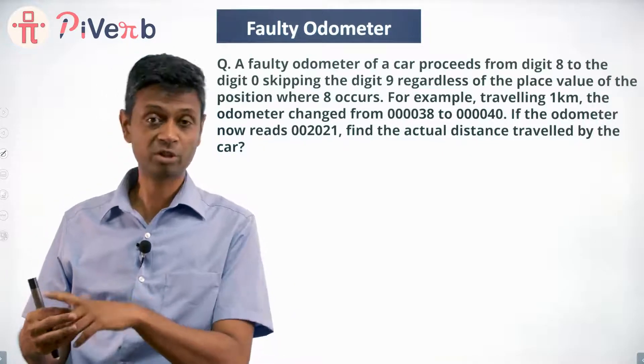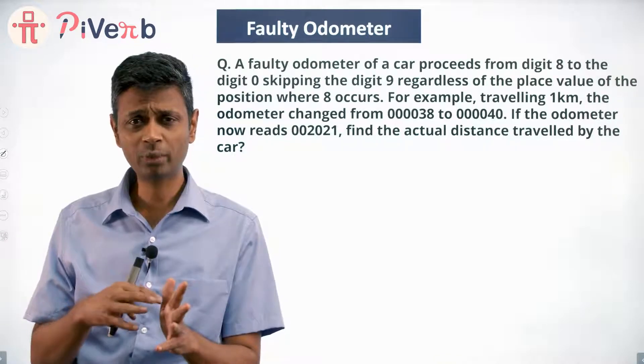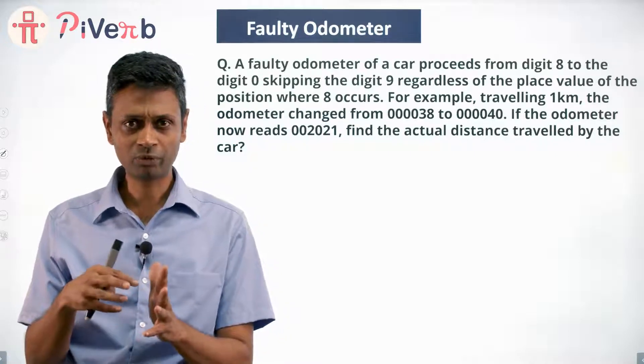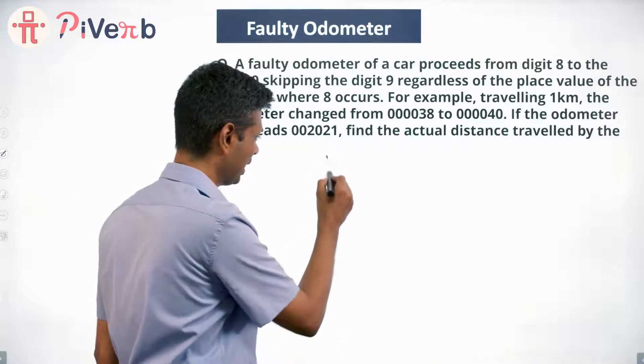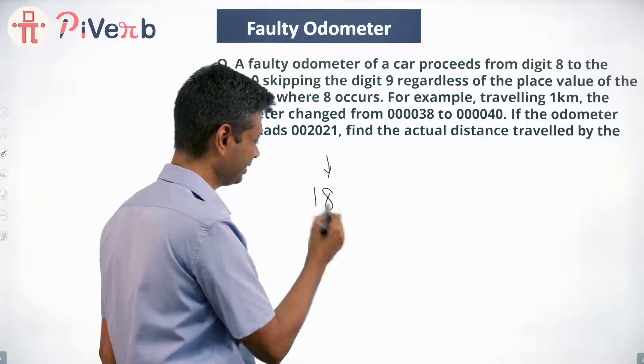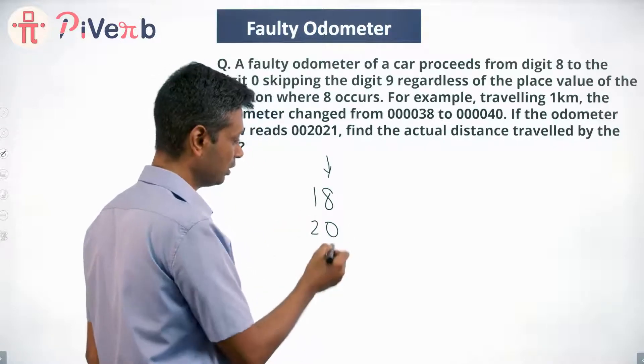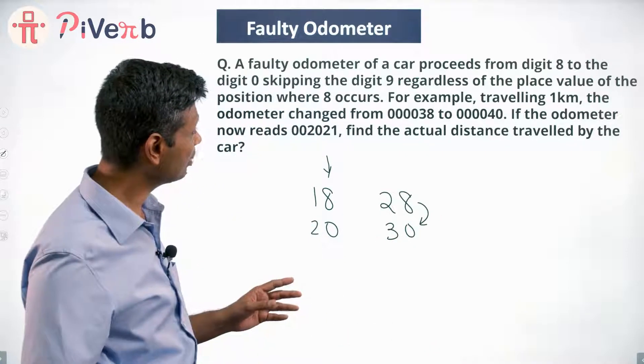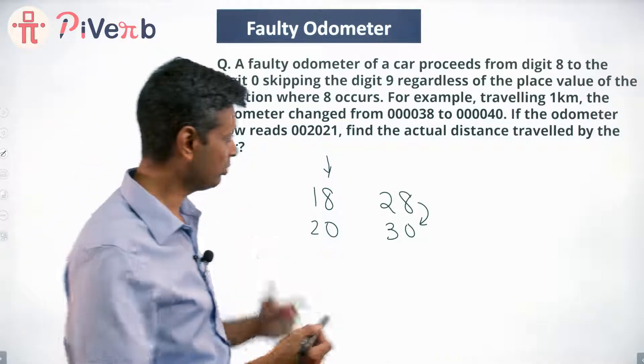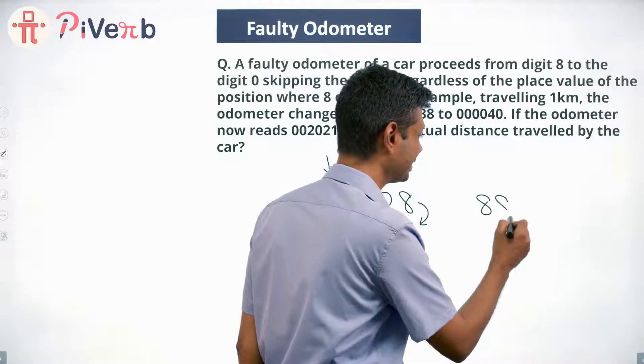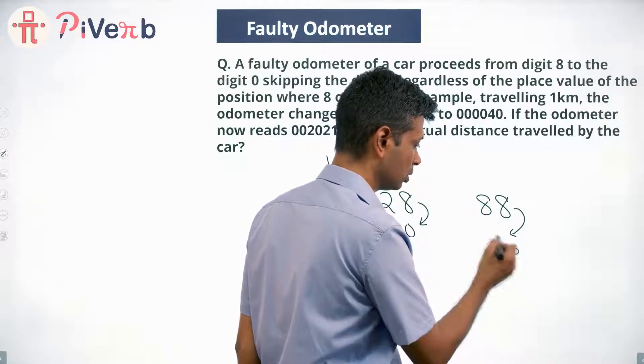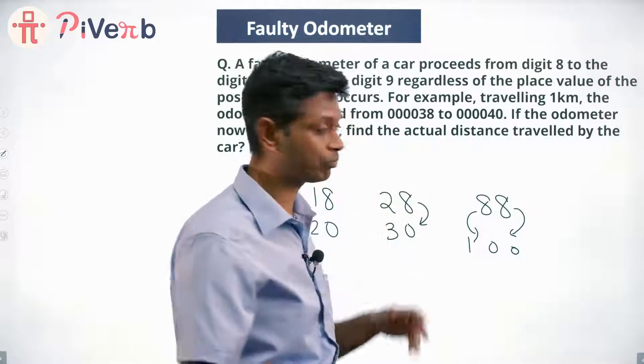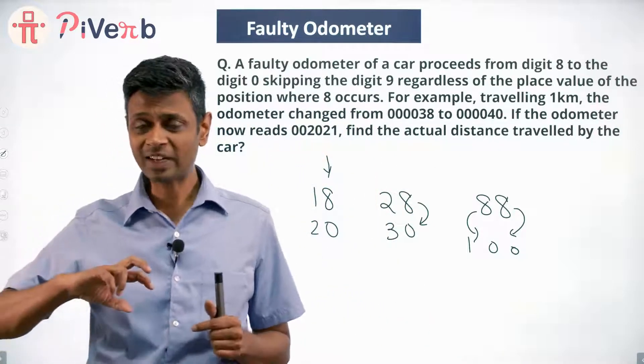So when it goes to 0, the next place has to be 1 and it will be 10, 11, 12, 13, 14, 15, 16, 17, 18. Again there is no 9, it will go to 0. So after 8, any digit goes to 0. So after 18 we will have 20, after 28 we will have 30. And this happens no matter where this 8 is.